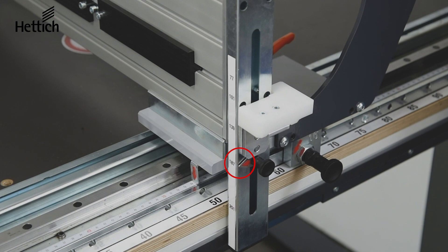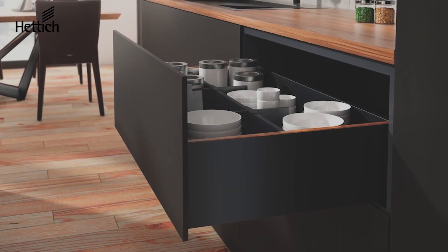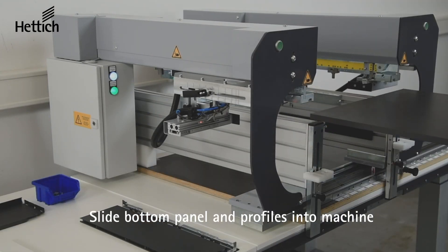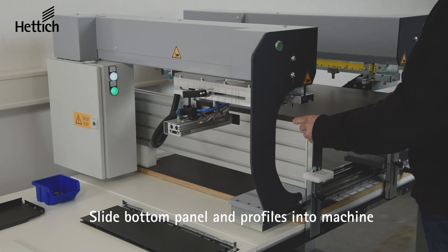You are now ready to assemble a drawer. First slide the bottom panel all the way into the holding pins, then slide each profile into the machine.